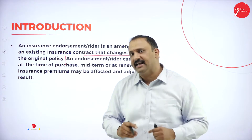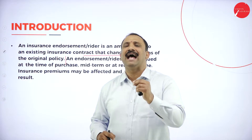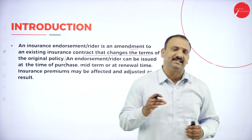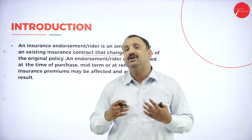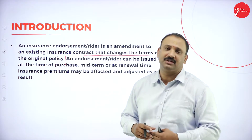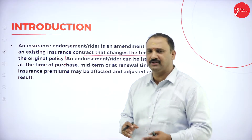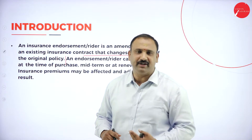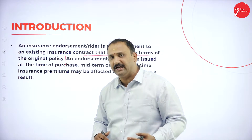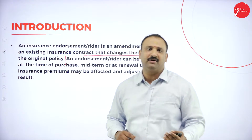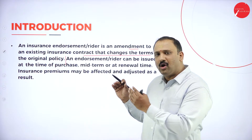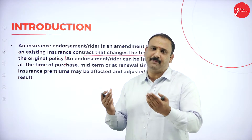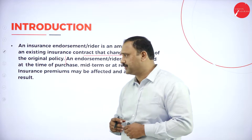This means you are going to give an add-on, an external benefit to the existing insurance — that is where the endorsement or rider comes into picture. This can be of any type: it might be a health benefit rider, for a property, or for some extra coverage — an external benefit provided depending on the type of insurance.